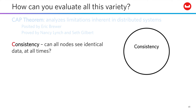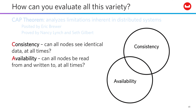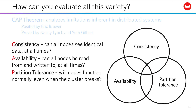First, consistency. When a client connects to a particular node — in this case a database node — can that node see all the available data in the same state? Second, availability: can a client read or write from any node it chooses at any time? And third, partition tolerance: if there is more than one node involved, meaning we're talking about clustered software, will nodes function normally if the network drops between some of them, leaving them out of contact?